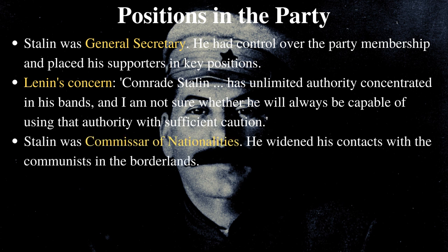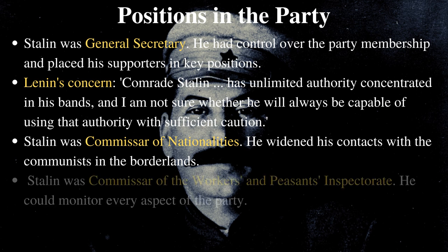For example, in 1917 Stalin became Commissar of Nationalities, which enabled him to widen his contacts with the Communists in the borderlands, many of whom were part of his entourage in the Kremlin later on. And in 1920, Stalin became Commissar of the Workers and Peasants Inspectorate, which in simple terms enabled him to monitor every aspect of the party and remove anyone he saw as inefficient or corrupt.